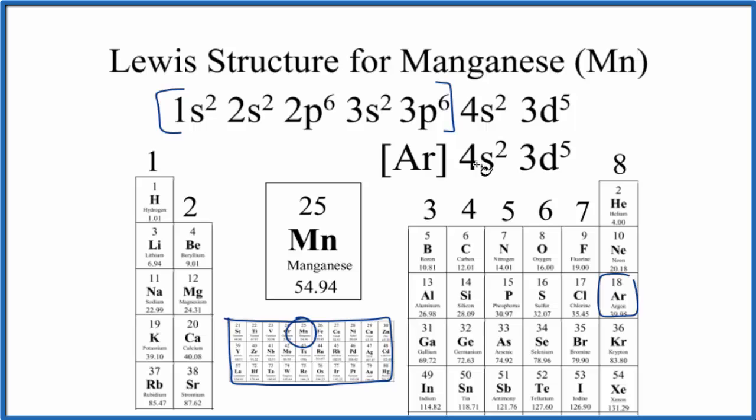Sometimes you'll see the 4s2 written after the 3d5. Either way is okay, but these are the valence electrons for manganese. We have 2 plus 5, we have 7. So now we can write a dot structure for manganese.